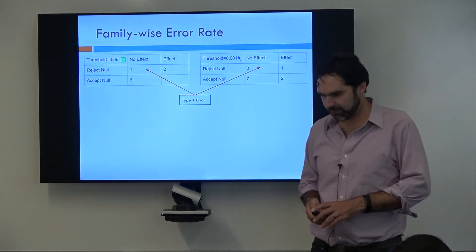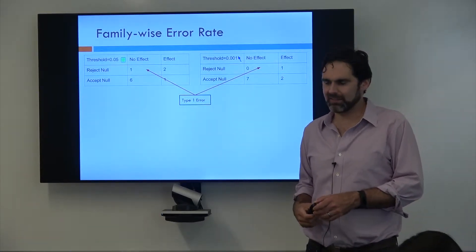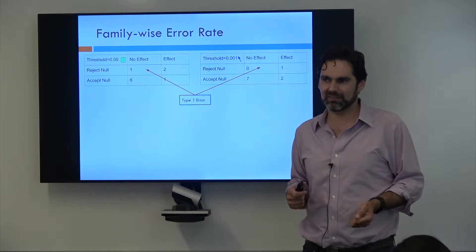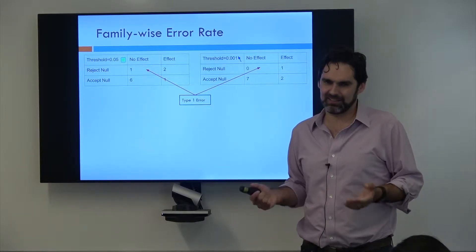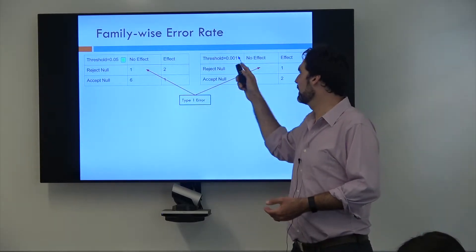When we talk about family-wise error rate, we usually talk about this thing called type 1 error. And as far as I'm aware, there's no difference between a false positive and a type 1 error. It just depends who you ask what terminology they're going to use. So a lot of times these are called type 1 error.